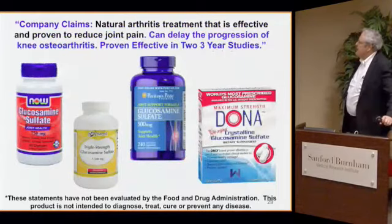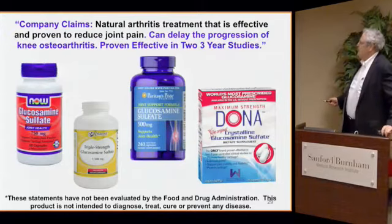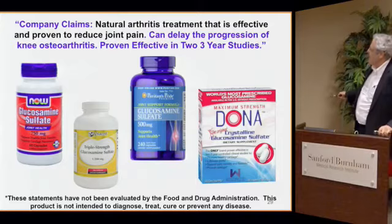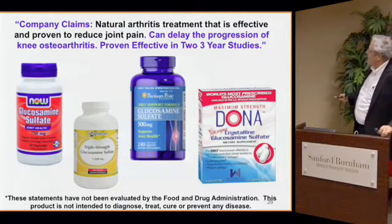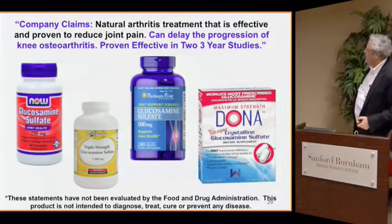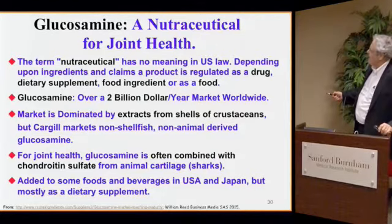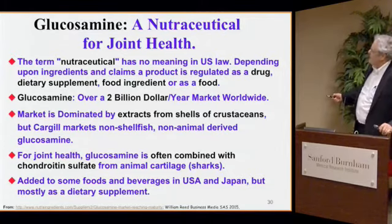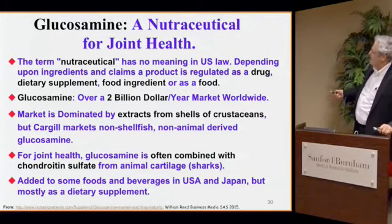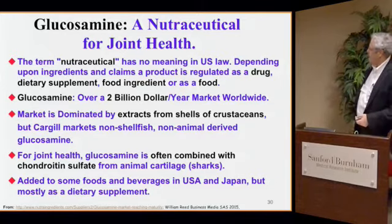The last thing I want to talk about is glucosamine. A lot of people are eating glucosamine — I just pulled some pictures of glucosamine sulfate off the web. It turns out that in the literature, the form that's actually prescribed in other countries where it's a controlled drug is probably the one to take. It's a $2 billion a year market right now. It's mainly made from shells of crustaceans, although Cargill has a plant-derived form. It's often combined with chondroitin sulfate, and some people are even putting it into foods, beverages, and dog food.